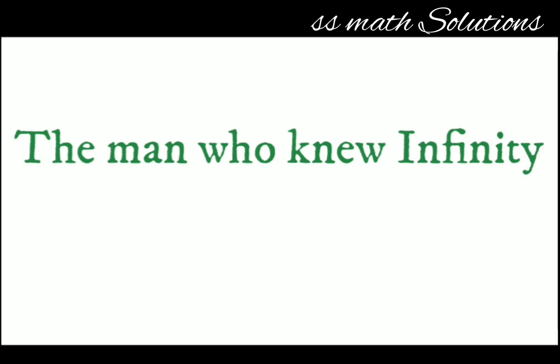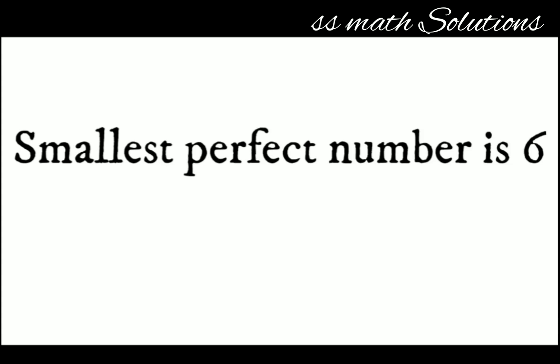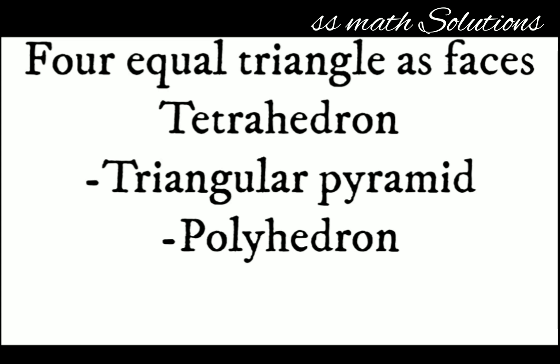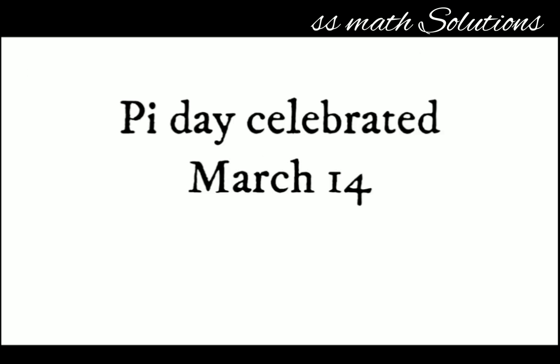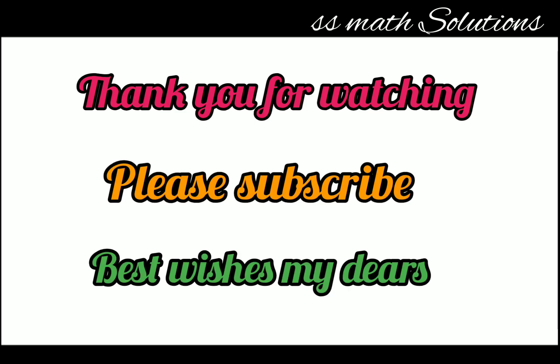What is the smallest perfect number? Six is the smallest perfect number. A solid shape that has four equal triangles as faces is called a tetrahedron, also called a triangular pyramid — it has four faces and is a polyhedron. When is Pi Day observed around the world? Pi Day is observed on March 14th. That's all for today — thank you for watching, please subscribe for future videos.